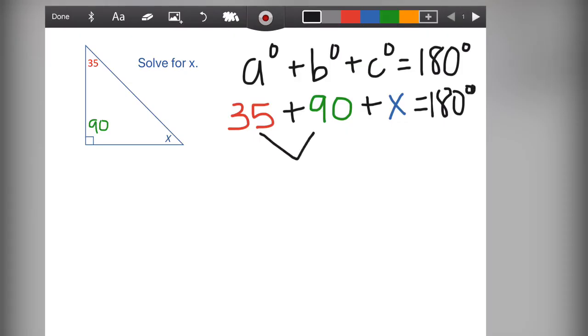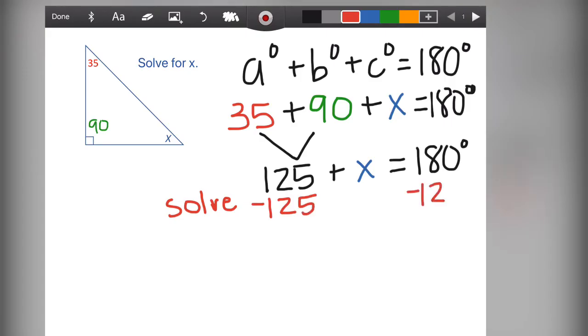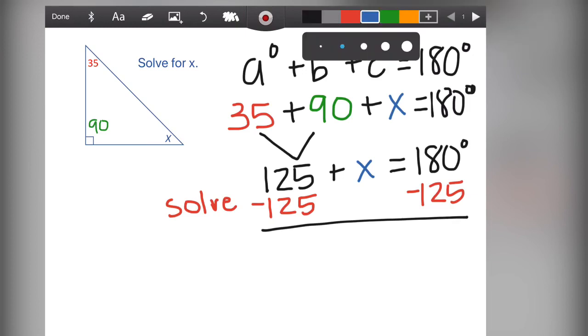Let's combine our like terms. 35 and 90 is going to give us 125. Leaving X as X because it is still unknown and setting it equal to 180 degrees. Again, we see an equation where we are going to do the inverse operation and solve by subtracting 125 from both sides in order to keep balance. We have then X left on the left side. And by doing the math of 180 minus 125, we will find out the value of X.